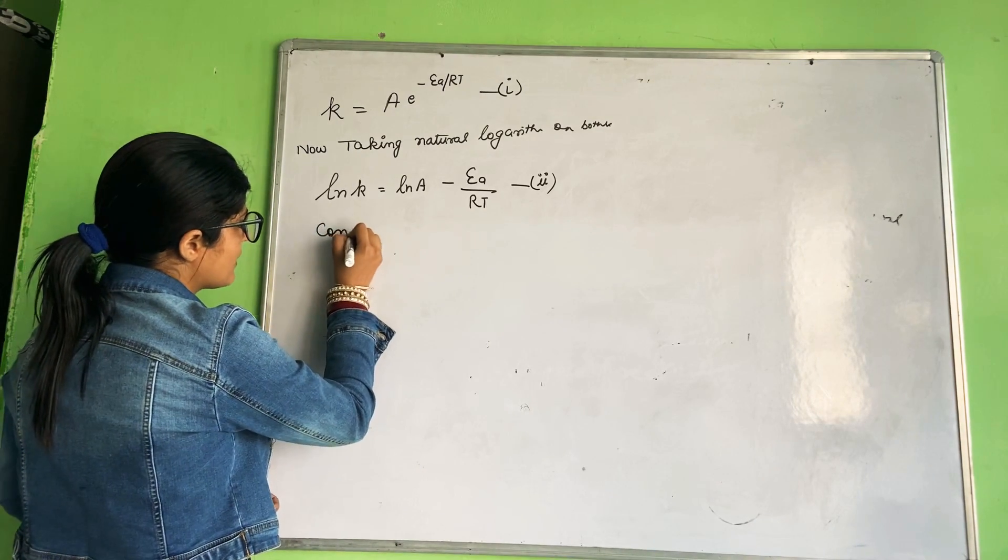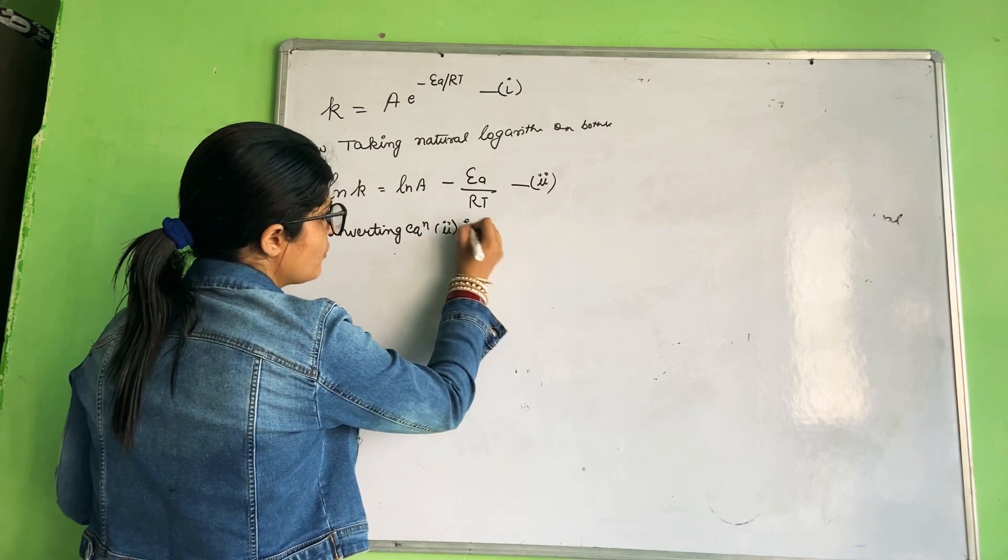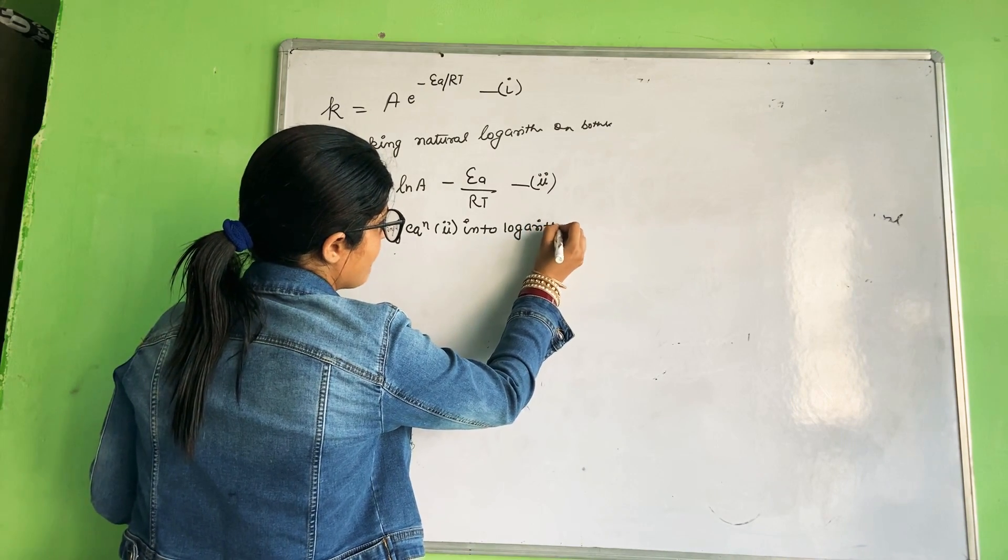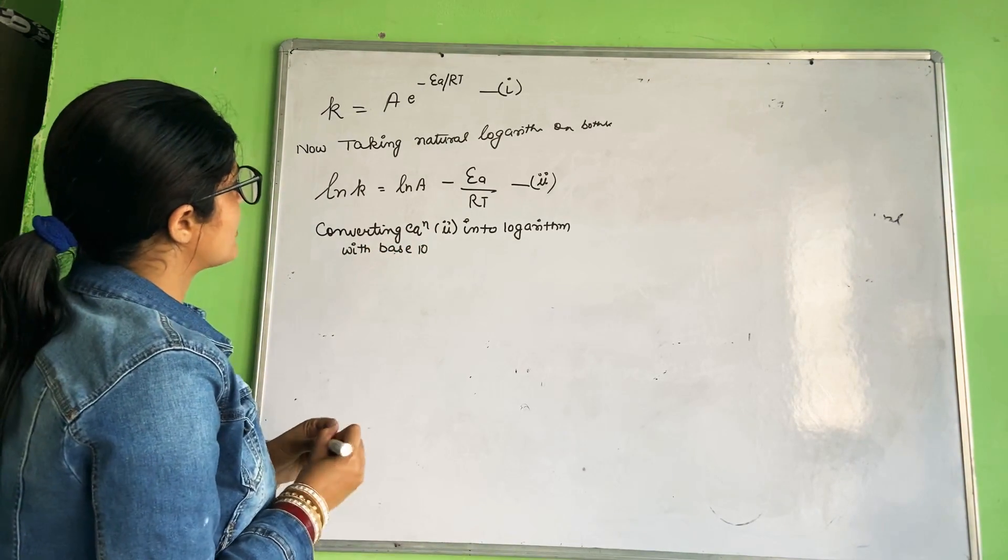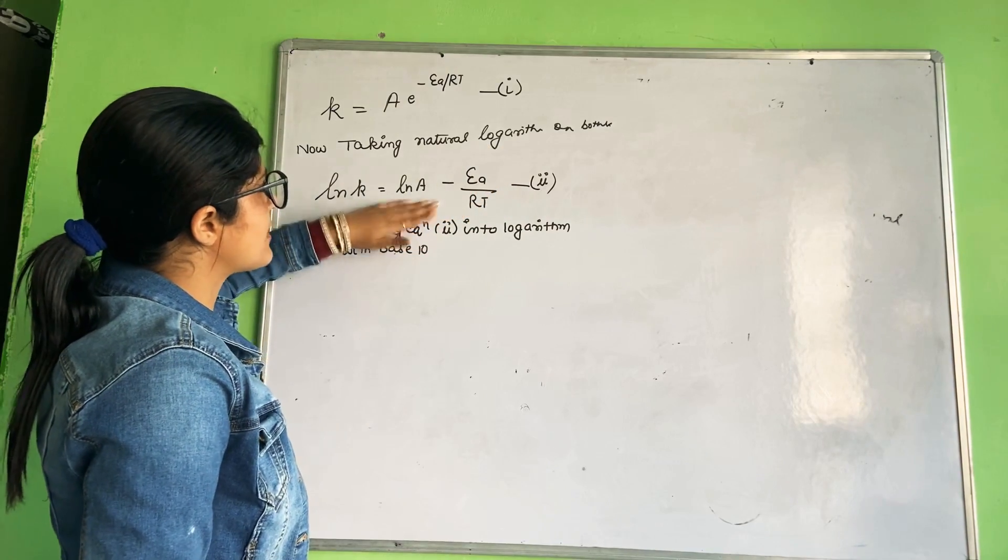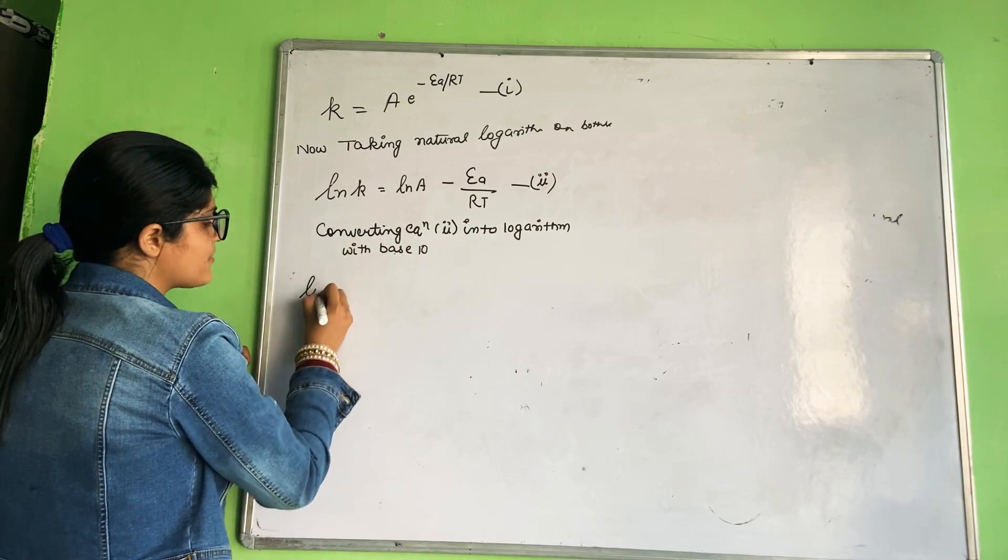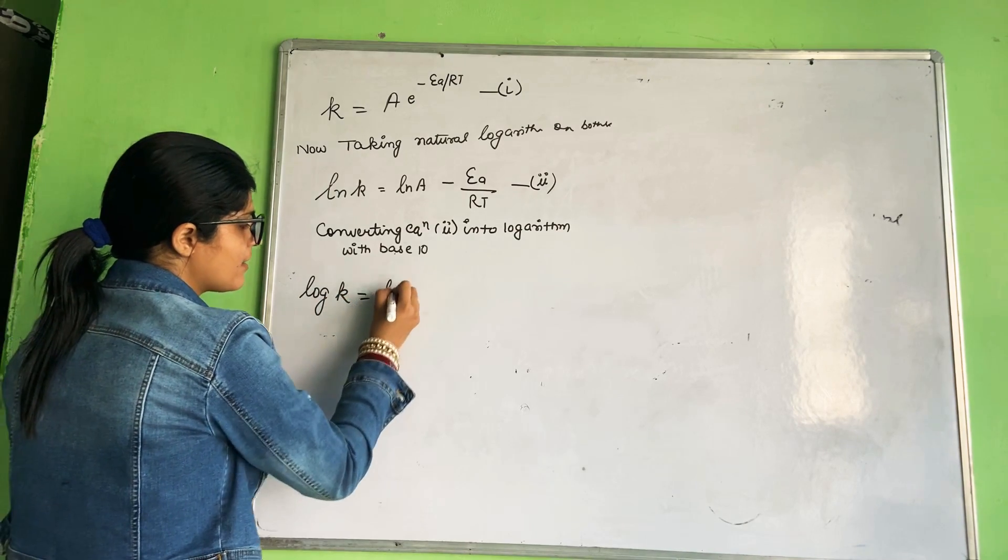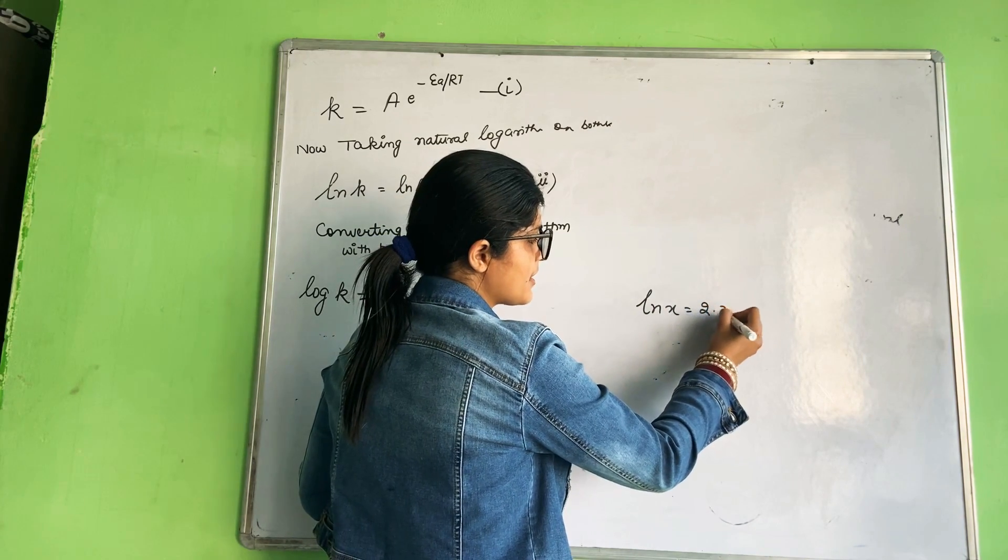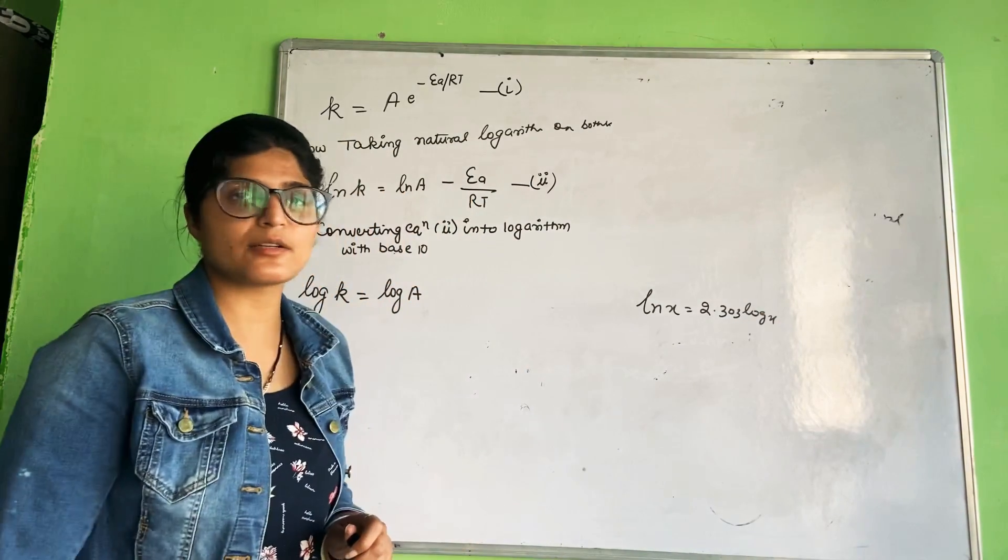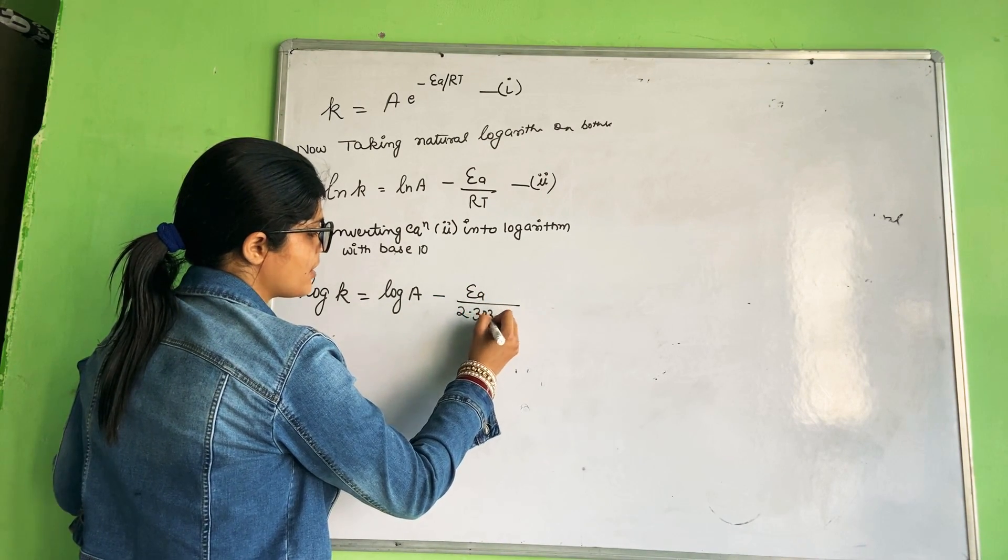Now converting equation 2 into logarithm with base 10. Arrhenius equation has natural log. When you convert to log with base 10, that means log k equals log A. When you convert to log with base 10, you multiply by 2.303. This equation becomes Ea upon 2.303 RT.